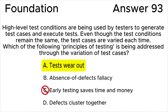Answer C is invalid because the early testing saves time and money principle is concerned with fixing defects early on to prevent the accumulation of subsequent defects in derived work products, thereby reducing costs and the likelihood of failures. This is typically addressed by starting testing — both static and dynamic — as early as possible, but is not addressed by using high-level test conditions to generate and execute test cases.